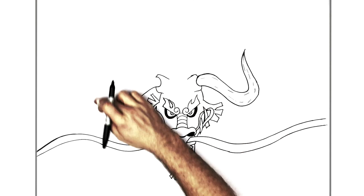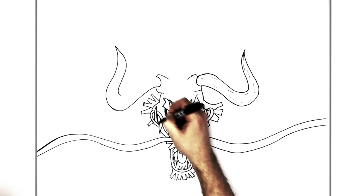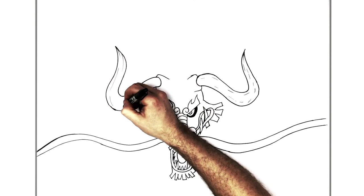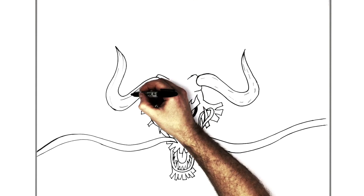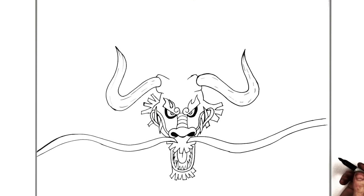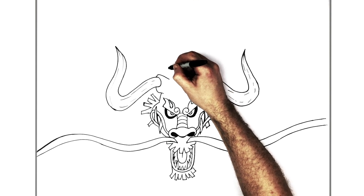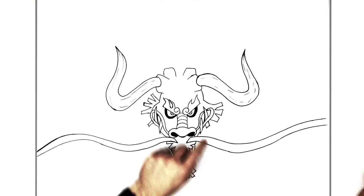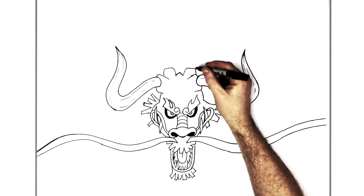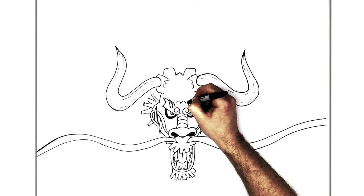There are layers of scales that run down his head here and we're just going to do some suggestions of it like so. Then there are more horns — another set — and they're going to go up to the top of the page, up to there. Then we're going to bring it back — it's kind of like a double horn.